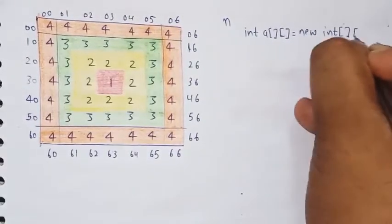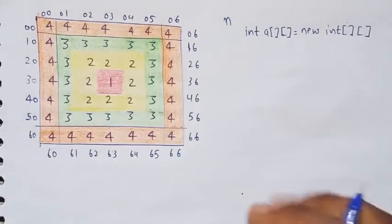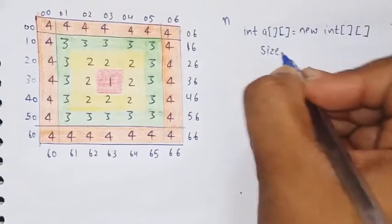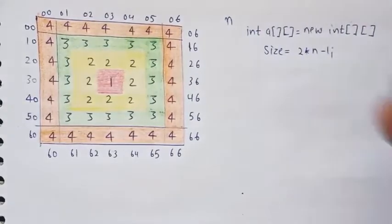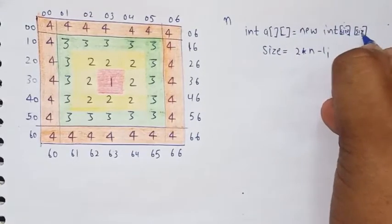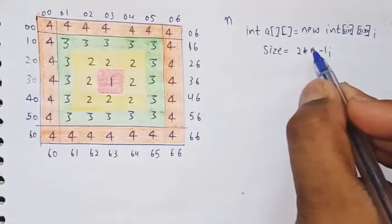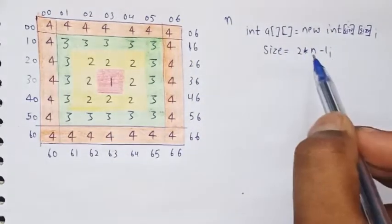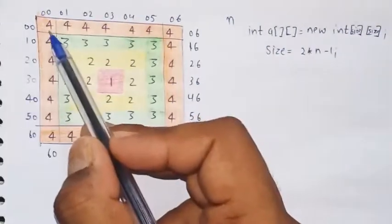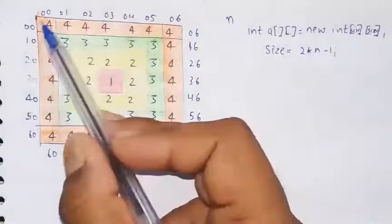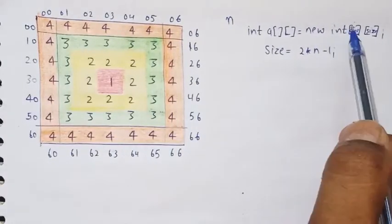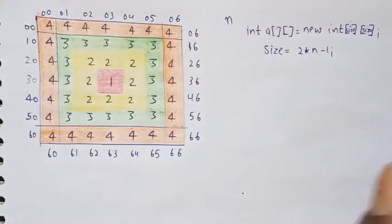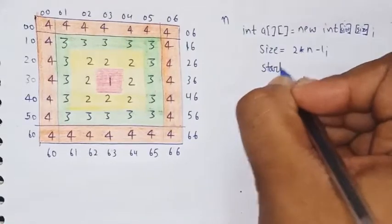Now the size — what will be the size? The size is 2 multiplied by n minus 1. So for n equals 4, the size is 2 times 4 minus 1 equals 7. You can count: 1, 2, 3, 4, 5, 6, 7 — yes, 7. So the size is 7.